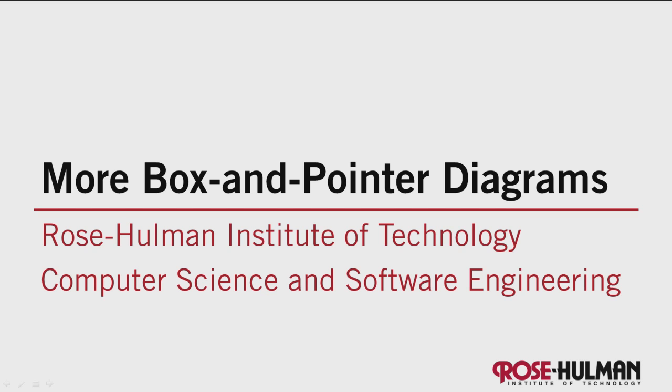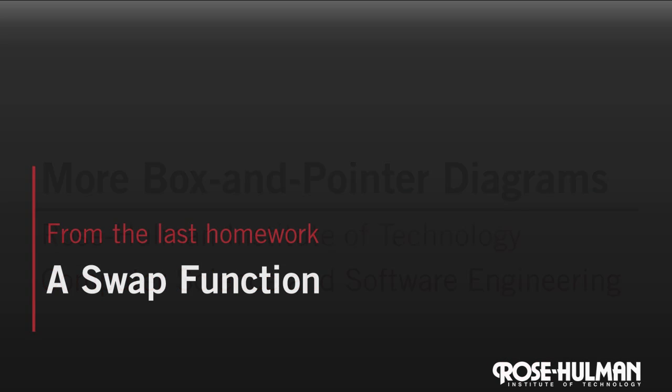Hello. In this video, we'll get some more practice with box and pointer diagrams. Recall that the swap function should exchange the value of two variables passed to it. Swapping values is important when sorting a list of data. Let's look at some possible approaches to writing swap, and then draw box and pointer diagrams to show why they would or wouldn't work. We'll actually start with some incorrect attempts.